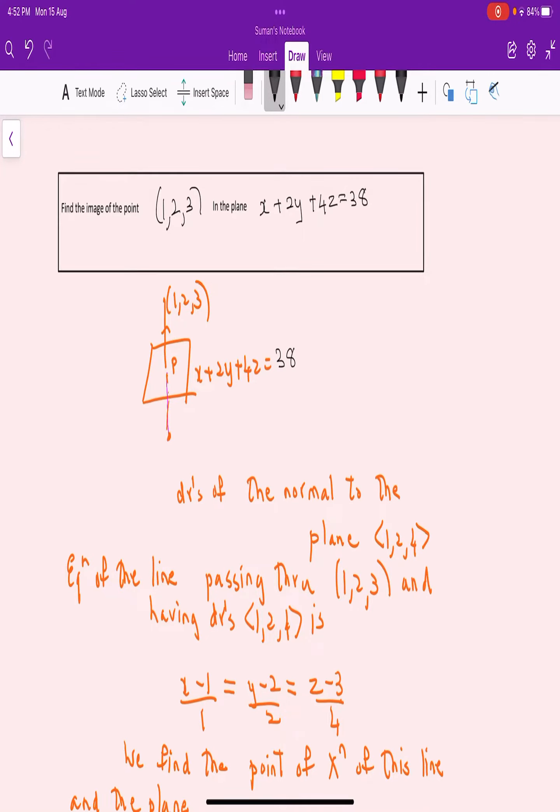This is an important question which is often asked. Find the image of the point (1, 2, 3) in the plane x + 2y + 4z = 38.